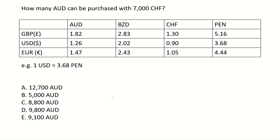How many AUD can be purchased with 7,000 CHF? We have this table here with some currencies along the top and down the side, along with an example of how to use the table, which says 1 USD equals 3.68 PEN. So we want to convert 7,000 CHF, which is here on the table, into AUD, which is here on the table.